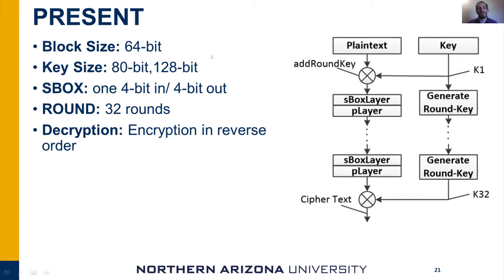PRESENT is a 64-bit lightweight block cipher. It uses 80-bit or 128-bit key sizes and has one very tiny S-box. It uses 32 rounds, and decryption is encryption in reverse order. You can see the structure of the algorithm on the block diagram.